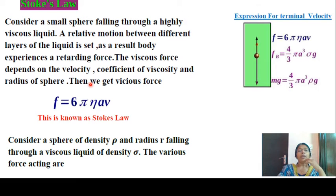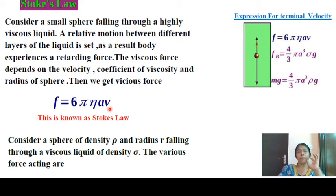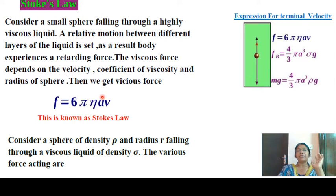The viscous force depends on the velocity of the sphere. The equation for viscous force is F equals 6·pi·eta·r·v, where r is the radius of the sphere. This frictional force F equals 6·pi·eta·r·v is known as Stokes' law.